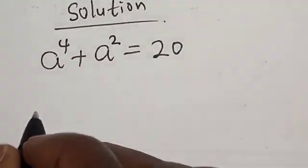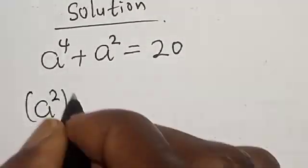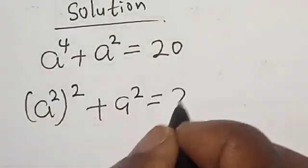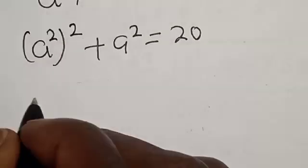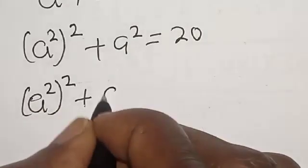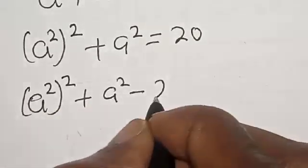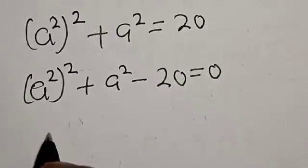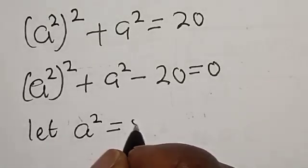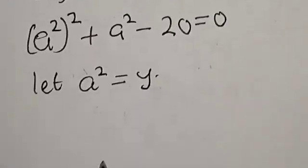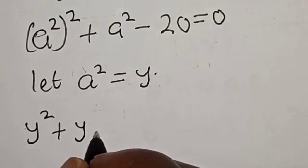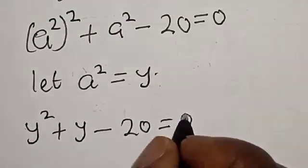Now, A raised to power 4 is the same thing as A square squared. So we have A square squared plus A square minus 20 is equal to 0. Let A square equal Y. Now Y square plus Y minus 20 is equal to 0.